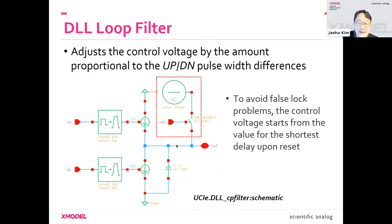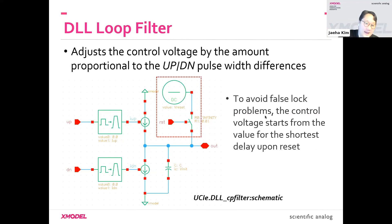DLLs typically suffer from false lock problems. Depending on where your initial state is, it may converge to a wrong point, or sometimes get stuck at the end of the range. There are various ways to mitigate that. The simplest one we use is just resetting the delay line at the shortest delay condition.